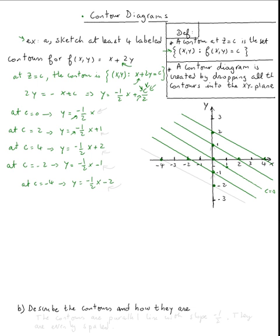So we get, of course, we're going to get parallel lines because they all have the same slope, negative one half. So describe the contours and how they are spaced. The contours are parallel lines with slope m equal negative one half.